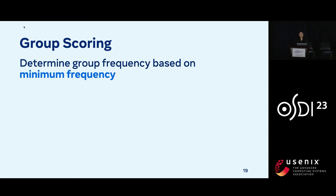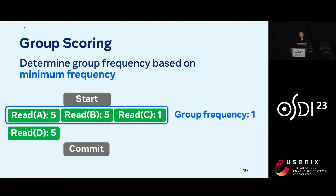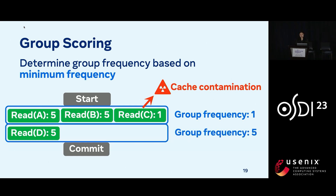For group frequency, we solve for the minimum frequency. The reason for this is because of the all-or-nothing property — since we don't get any latency improvement unless all of those objects are in cache, we care about the minimum frequency the most. For this transaction, our first group consists of A, B, and C, and the group frequency is 1 since we're taking the minimum — this is an example of cache contamination, since C is harder to cache and lowers the scores of A and B. For the second group, it's just D by itself, so the group frequency is 5.